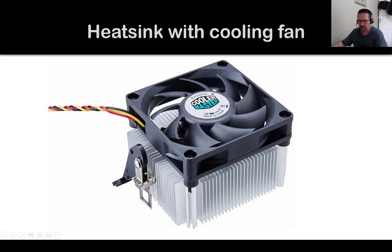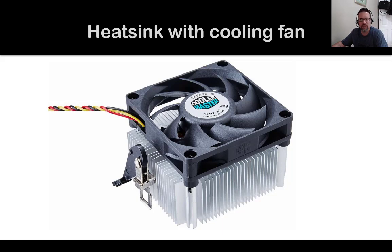This is a heat sink with a cooling fan. The heat sink is made of a very cool metal — it stays cool and draws the heat away from the CPU, and the fan helps with that as well. The reason we have this is because a processor gets really hot when you're using it, and the more applications you have running, the hotter your processor gets. So the heat sink and cooling fan help keep the CPU nice and cool.